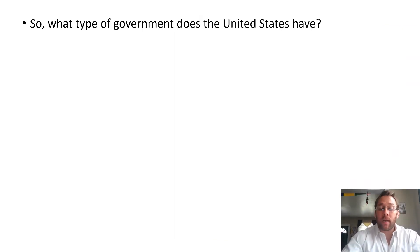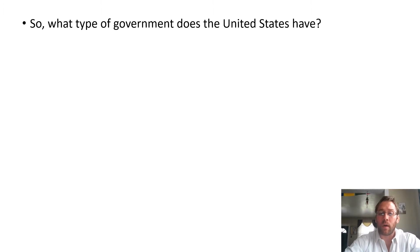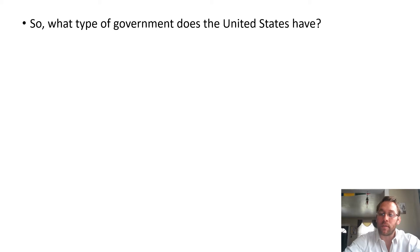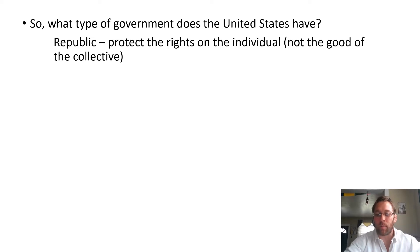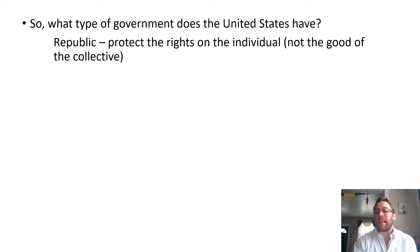What type of government does the United States have? Most students say 'a democracy' — that is inaccurate. All you have to do is say the Pledge of Allegiance: 'I pledge allegiance to the flag of the United States of America and to the Republic for which it stands.' Some people say we live in a republic, or a constitutional republic, or a democratic republic — meaning we elect our leaders. But at the end of the day, it's a republic.